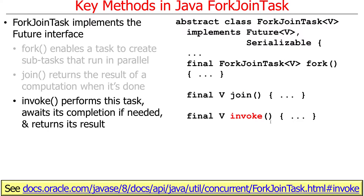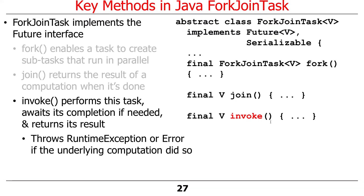Finally, invoke on ForkJoinTask will perform the task and block for its completion—fork is asynchronous, but invoke is synchronous. If the underlying computation throws an exception, invoke will also throw an exception.